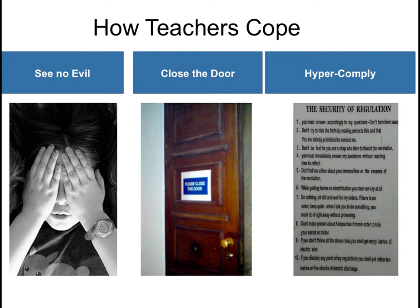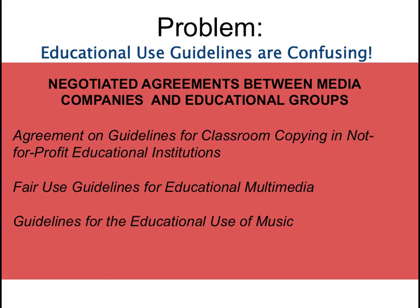All three of these strategies, we discovered, interfere with teachers using digital resources to promote innovation and learning. These coping strategies, while a way that teachers manage their own understanding of the law, have actually been interfering with innovation. We discovered that a big source of the problem was teachers' understanding of the educational use guidelines — things like the Agreement on Guidelines for Classroom Copying, the Fair Use Guidelines for Educational Multimedia, and the educational use of music guidelines. These are the kinds of rules you can hang over your copy machine.